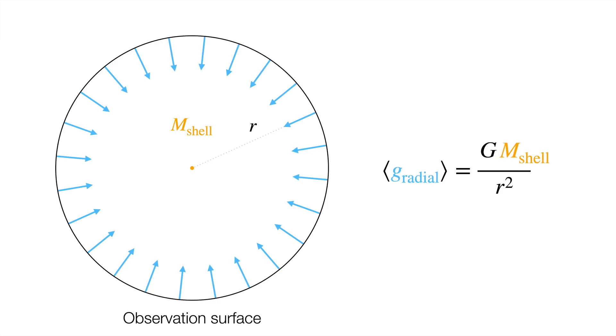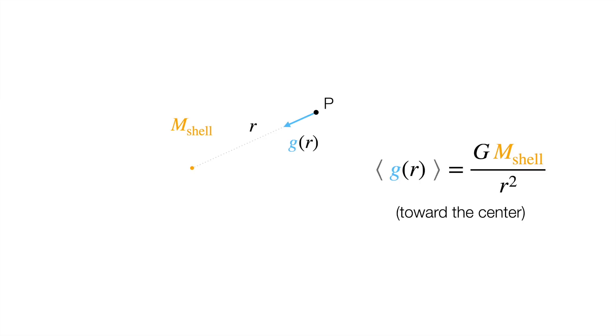Alright, we're on the home stretch. We just need to connect this back to our original problem. Since every point on the observation shell is equivalent, and experiences the same, purely radial acceleration, the value there is just equal to the average. This is like asking what the average of a set of numbers is, which are all the same. The average is just any one member of the set. Meaning, finally, we can remove the averaging brackets, and we're done.